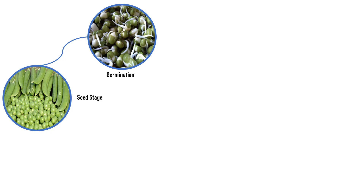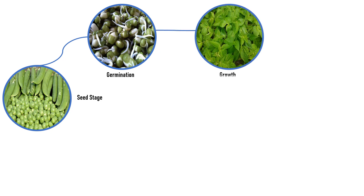The hypocotyl pushes through the soil along with the cotyledons or seed leaves. This is called germination or sprouting. The tiny root pushes down and grows, looking for water and nutrients. Soon the cotyledons fall off and the first true leaves emerge, and that leads to the next stage which is called growth.